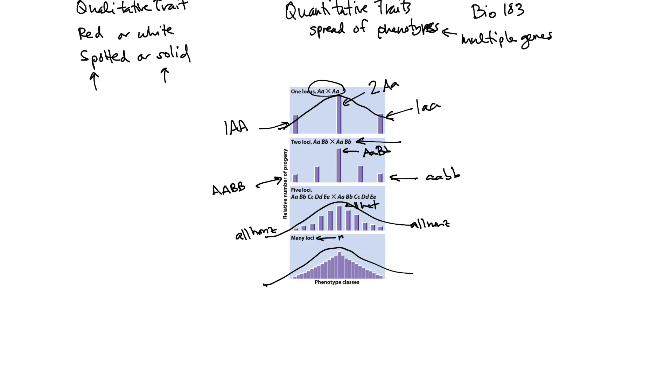Many loci or multiple genes are going to be involved in determining this phenotype. So an example of phenotype like this would be height, weight, your skin color, maybe eye color, lots of examples, so many things.